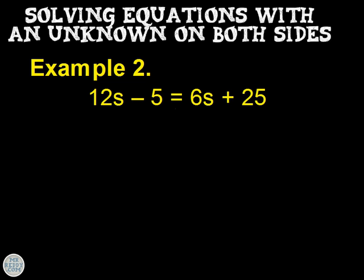Second example. We used the suggestion that I made just a moment ago about finding the smaller coefficient. We can compare 12s with 6s. We see that this one is smaller, so we'll deal with that side first.